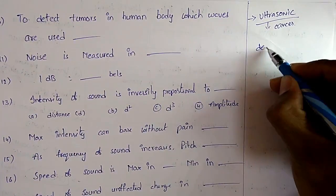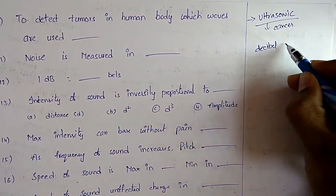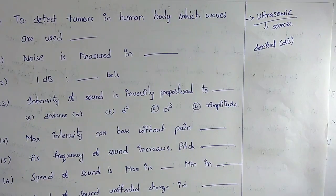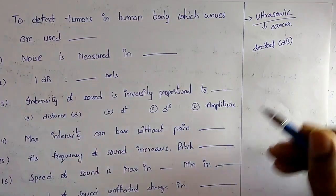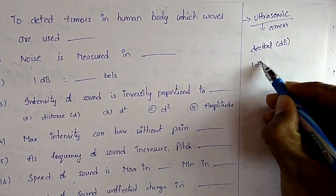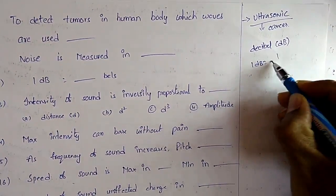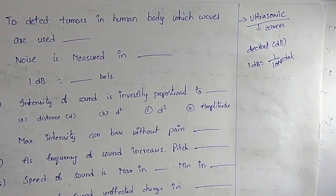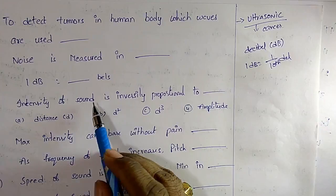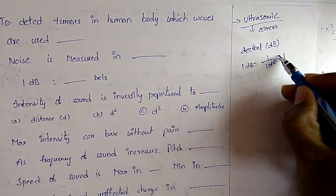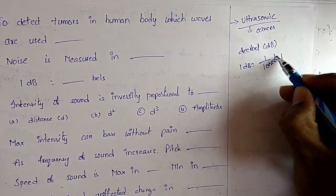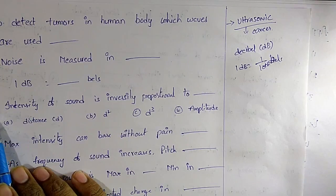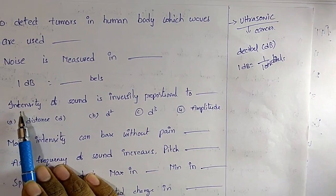Question 11: Noise is measured in decibels (dB). 1 dB equals one-tenth of a bel.